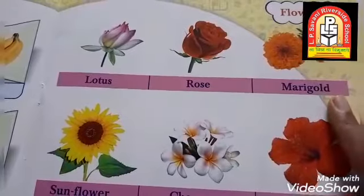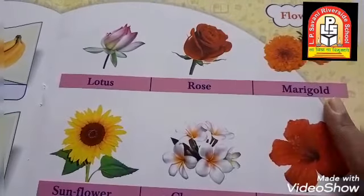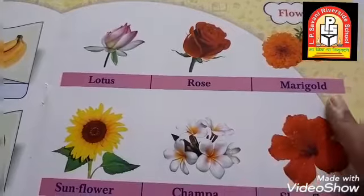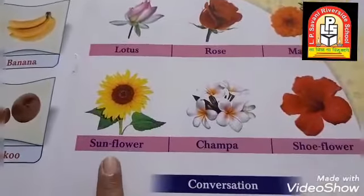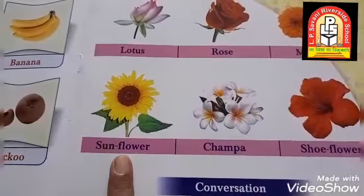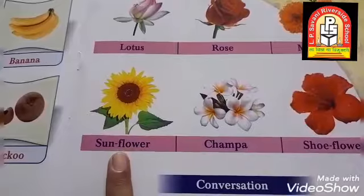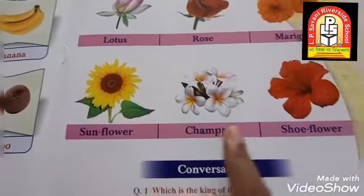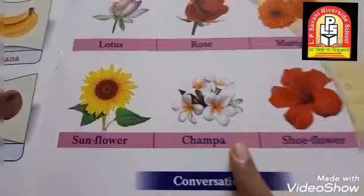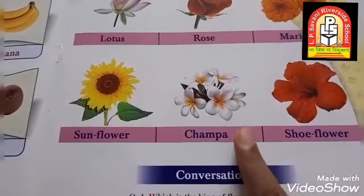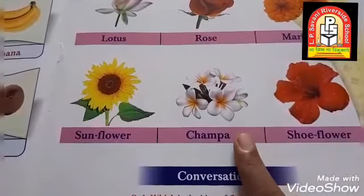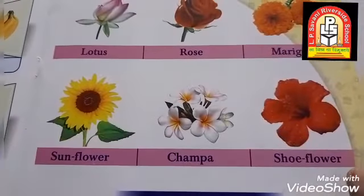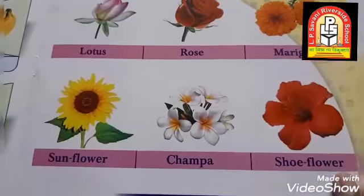This is marigold. Which flower is this? This is marigold. And this is sunflower. Which flower is this? This is sunflower. Next, champa — this is champa. And last one, soufflau — this is soufflau.